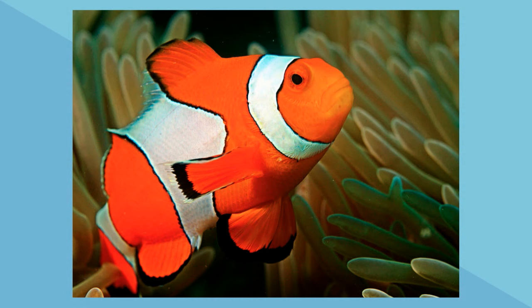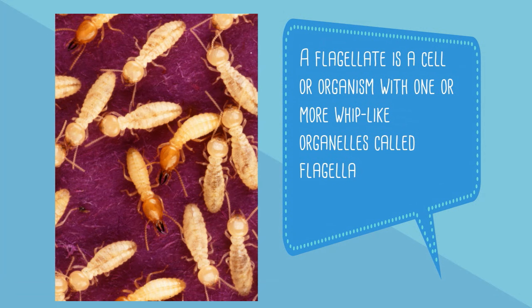Next are termites and intestinal flagellates. The flagellates have the ability to digest parts of the wood that the termite eats. So the termite gets help with digestion and the intestinal flagellates get a nice meal.